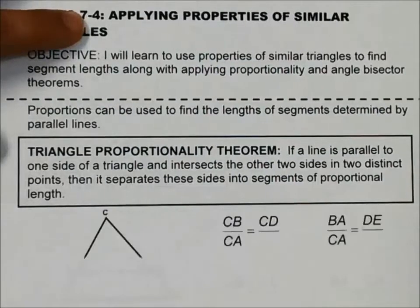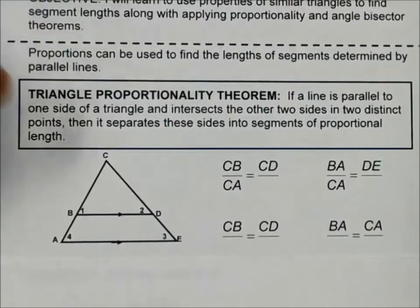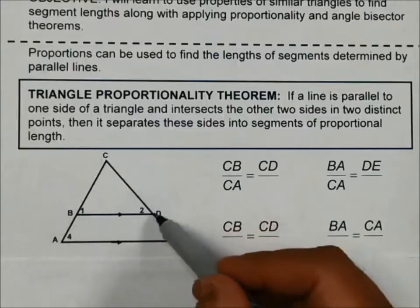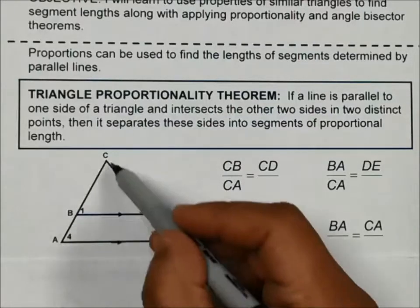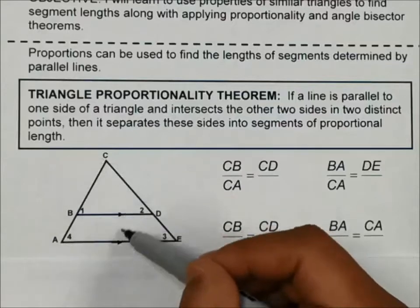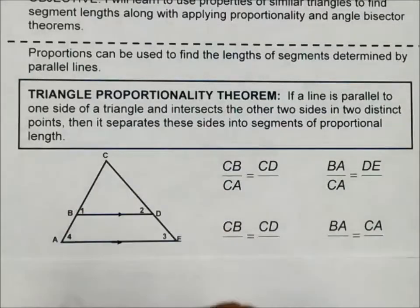So I'm going to use this picture here to explain what all these words mean. I have this triangle CBD, the smaller triangle that's embedded inside this CAE triangle. Now because these two lines right here are parallel, I can use proportions to figure out the different sides.